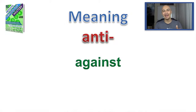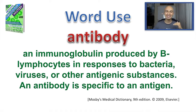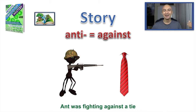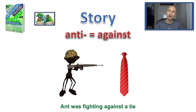Anti means against. A quick word used for that is antibody — an immunoglobulin produced by B lymphocytes in response to bacteria, viruses, and other antigenic substances. An antibody is specific to an antigen. My quick story for anti meaning against is: an ant was fighting against a tie. Anti — against a tie. Remember that and lock it into your memory.